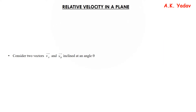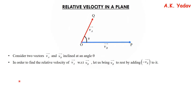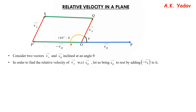Relative velocity in a plane: consider two vectors va and vb inclined at an angle theta. In order to find the relative velocity of va with respect to vb, let us bring vb to rest by adding minus of vb to it. So minus of vb is added; now these two are the sides of a parallelogram having an angle of (180 − θ) between them.